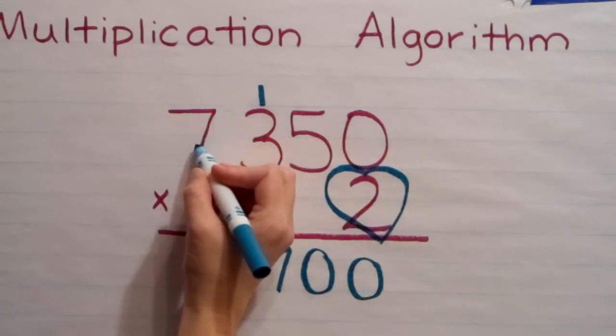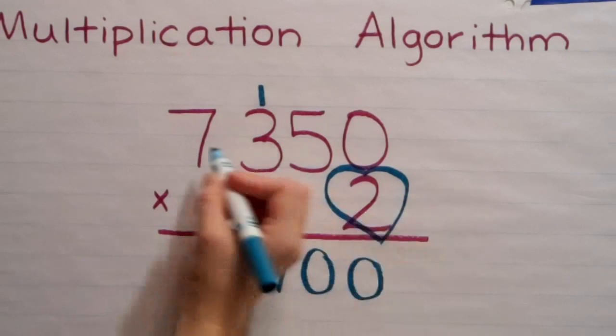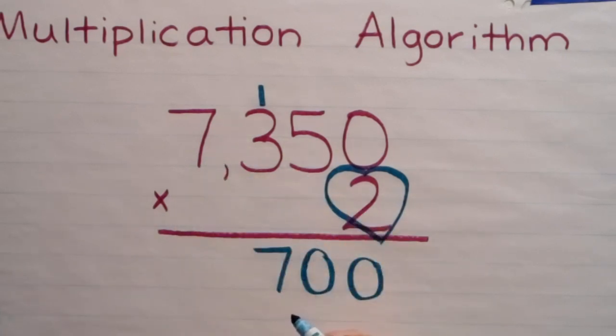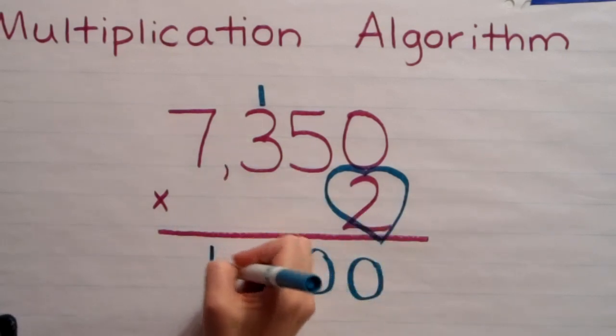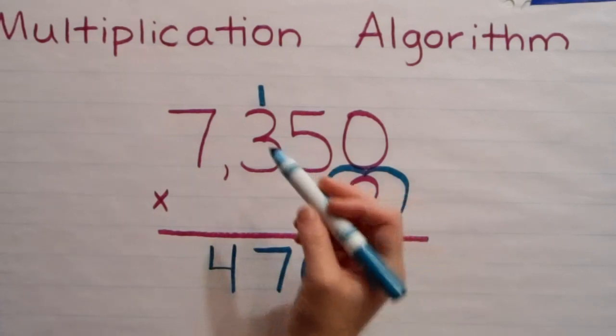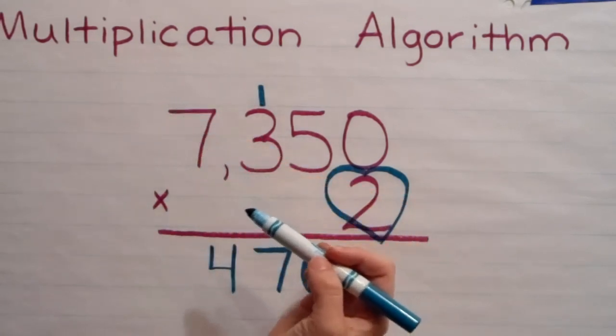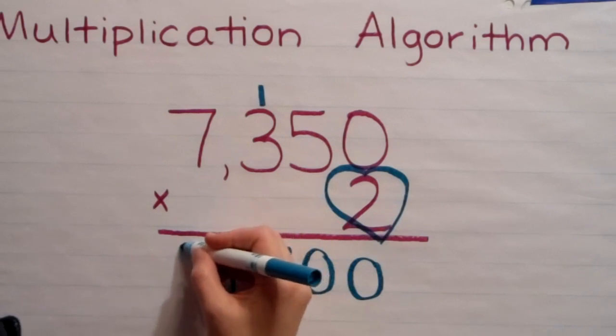Two times seven, going to the thousands place. Two times seven is fourteen. I put my four down, and I would normally regroup if I had another place value, but since I don't, I'm going to bring it straight down.